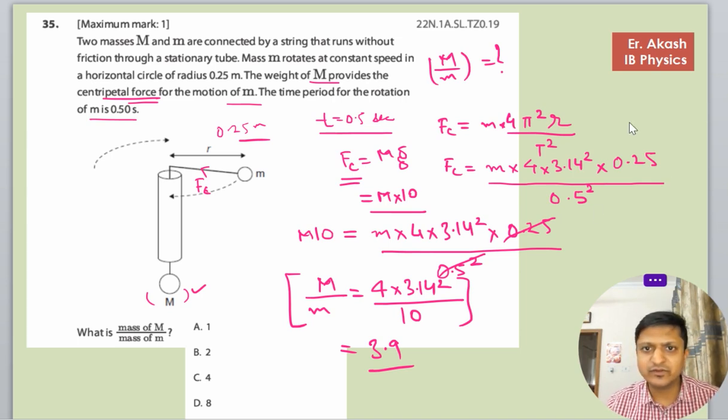In this question, we just equalized the centripetal force to Mg, because the weight of M provides the centripetal force of motion m. So we equalized it.